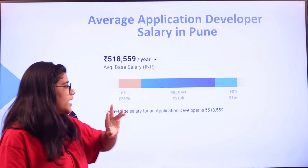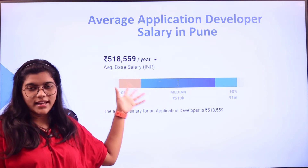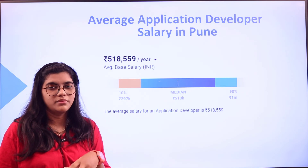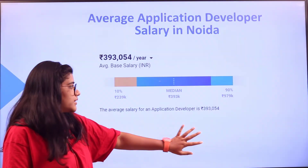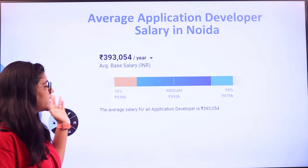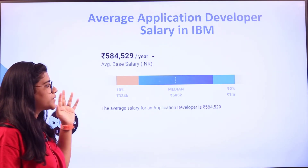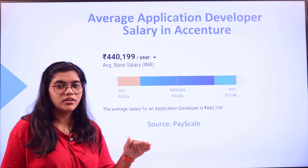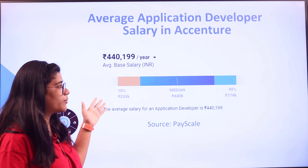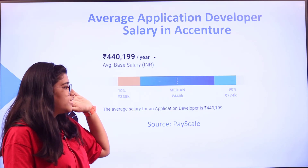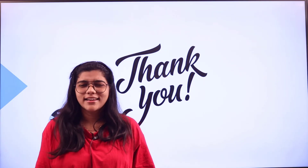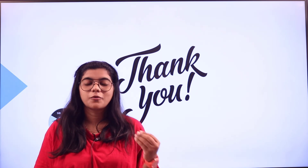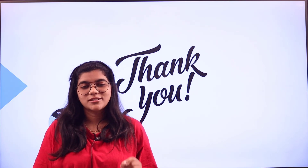In Pune, the average pay scale is around 5 lakhs, with senior level reaching 1 million; if you know the skills and how to implement them, you can land around 5 lakhs 19 thousand. In Noida or Delhi, you will be getting around 3 lakhs 93 thousand on average. For companies, IBM has an average pay of around 5 lakhs 84 thousand. In Accenture, you will be getting close to 4 lakhs 40 thousand on average. I hope this has cleared some of the basic criteria about an application developer. If you have any questions, place them in the comments, don't forget to subscribe, and thank you for watching.